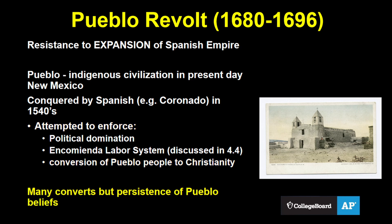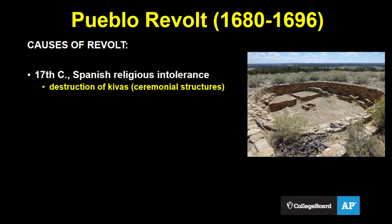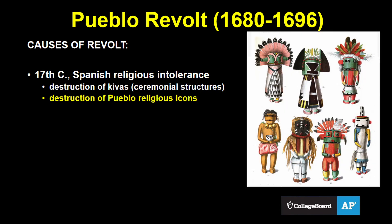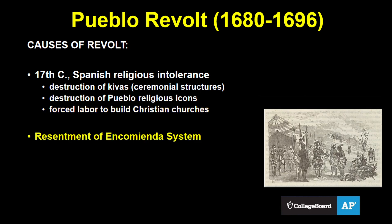Many did convert, but there always remained a strong persistence of Pueblo beliefs. In the 17th century, the Spanish attempted to eradicate these indigenous beliefs and were even less tolerant than they were before. They destroyed kivas — Pueblo ceremonial structures — as well as religious icons, and forced the people to build more churches. These events were the trigger for the major revolt in 1680, but there were many Pueblo grievances, including resentment towards the encomienda system, poor harvests, and food shortages.